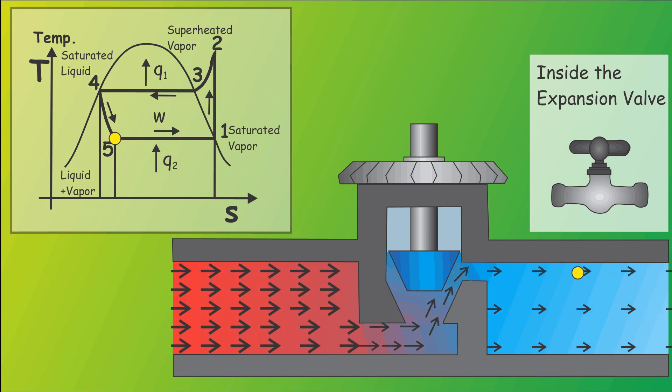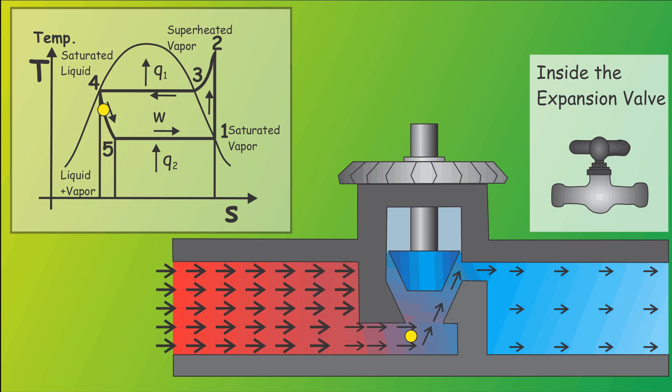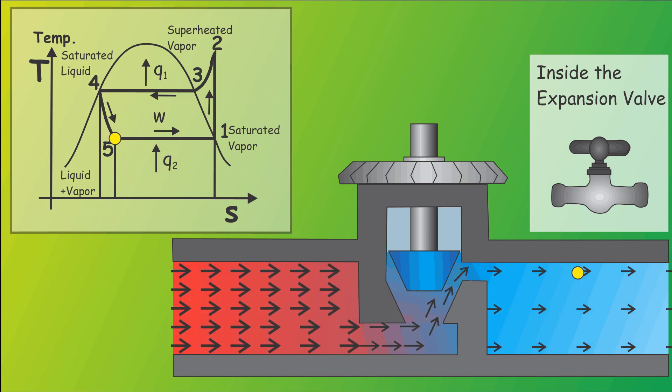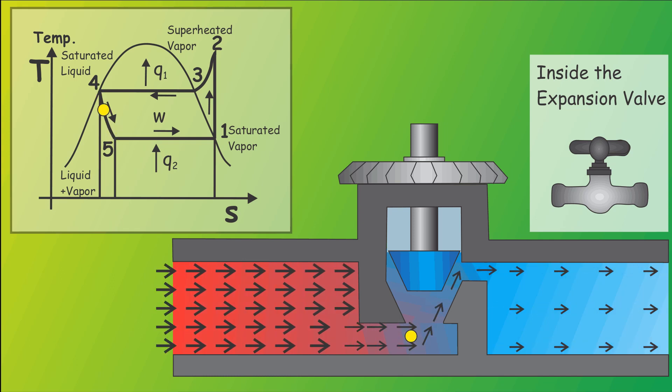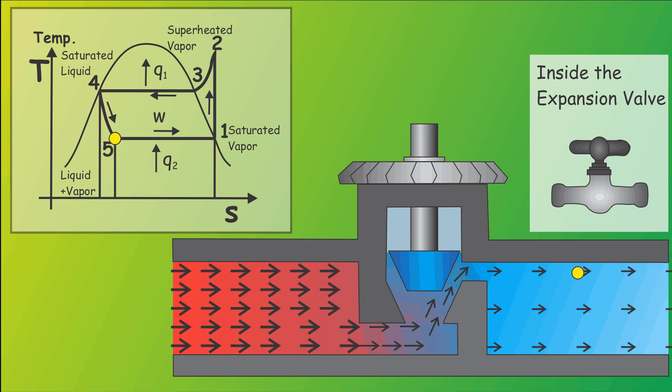After the condenser the now liquid refrigerant goes through the expansion valve that causes significant pressure decrease, which further results in a sudden drop in temperature.